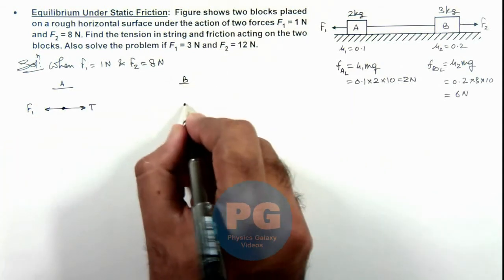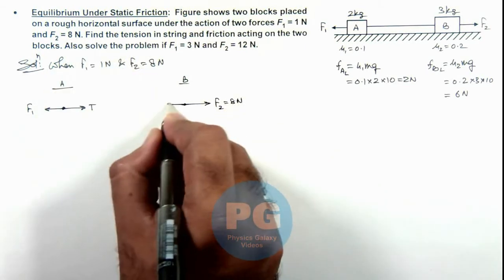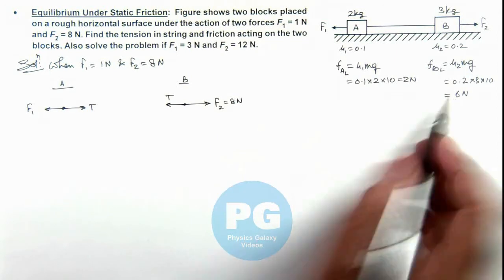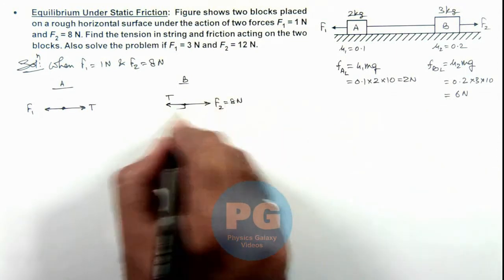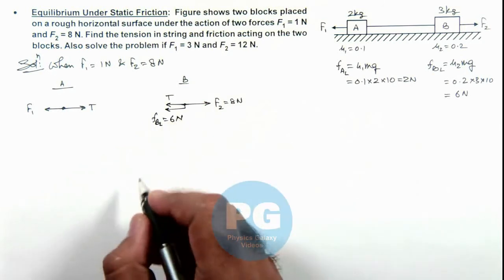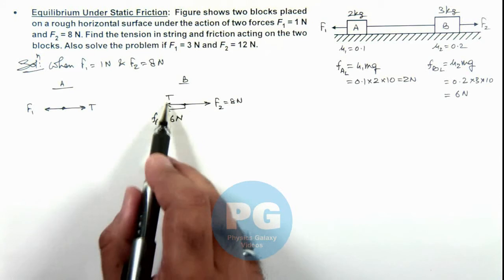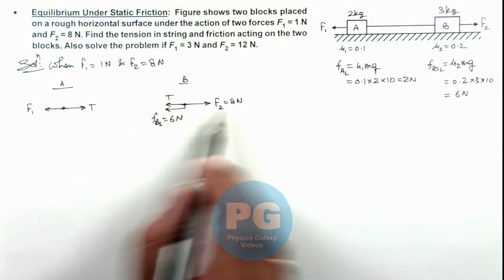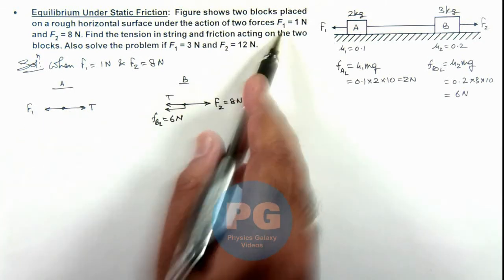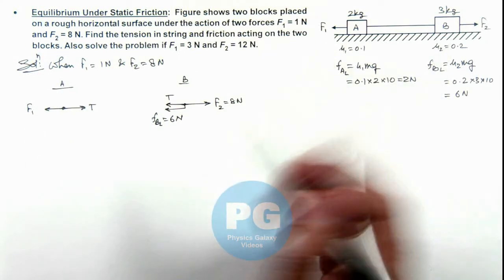For block B, toward right it is experiencing F2 which is 8 newton, and toward left it is T. The limiting friction at B is 6 newton, and since 8 newton is more than 6 newton, it has a sliding tendency toward right, so it will experience limiting friction equal to 6 newton. Still, if the block is at rest, the value of tension can be equal to 2 newton so that the system will get balanced. And if tension is 2 newton and F1 is 1 newton, the difference of force is less than the limiting friction, so it will not slide and both blocks will remain in equilibrium.